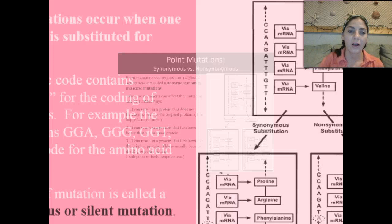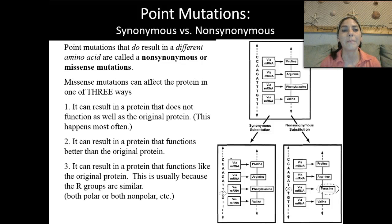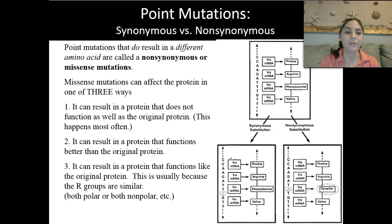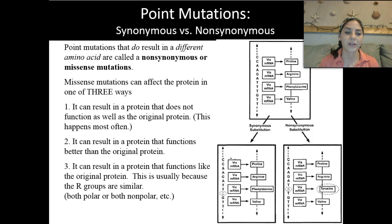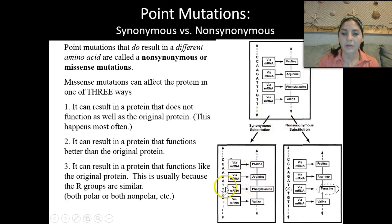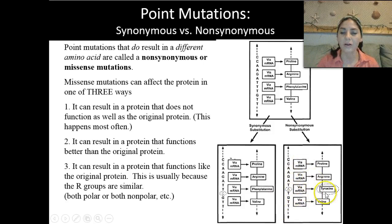The second type is non-synonymous, or a missense mutation. Missense mutations can affect the protein in one of three ways: first, it can result in a protein that doesn't function as well as the original — that's what happens most of the time; second, it could result in a protein that functions better than the original, which doesn't happen very often; or third, it can result in a protein that functions like the original because the R groups are similar — both polar or both non-polar. In a non-synonymous mutation, the codon no longer codes for the same amino acid, and the protein itself is going to change.